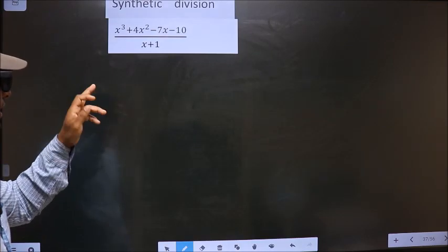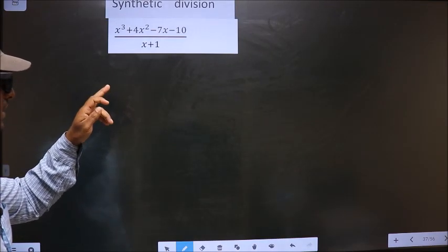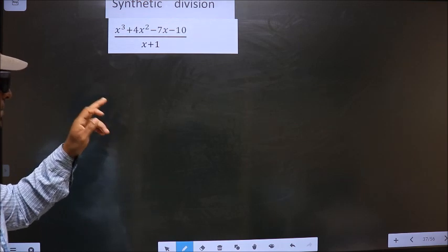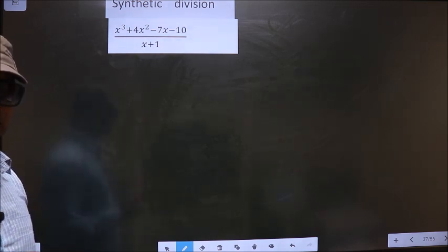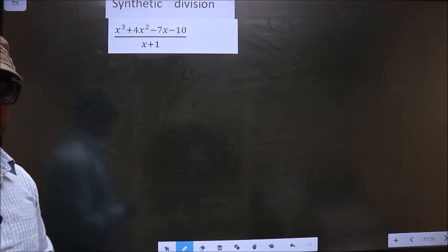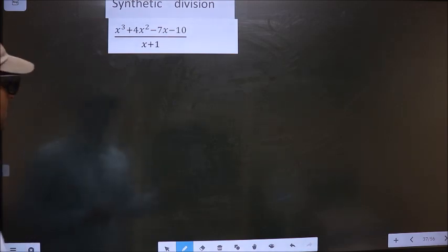Synthetic division: x cube plus 4x square minus 7x minus 10 by x plus 1. To do synthetic division, first we should frame it in this way.